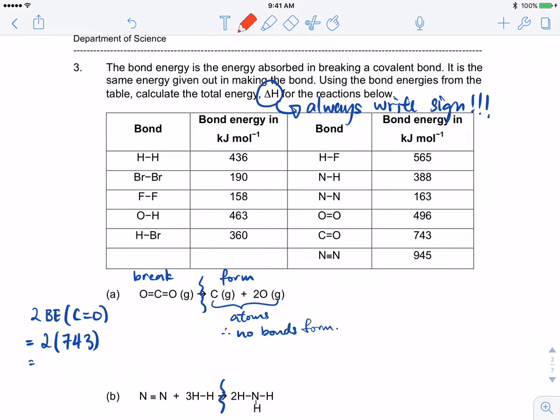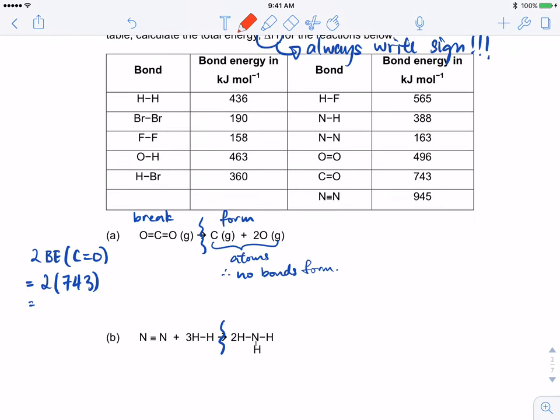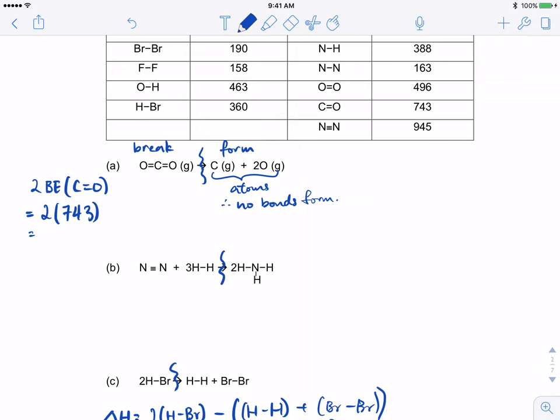Next question 3, bond energy. For this question, it was generally well done. Just that some of you got a bit confused. Take note that on the left hand side is our reactants. For reactants to form products, I must break the bonds of the reactants and I must form the bonds of the products. Over here I have written break and form. On the right hand side you will see that there's no formation of bonds. They are individual atoms.